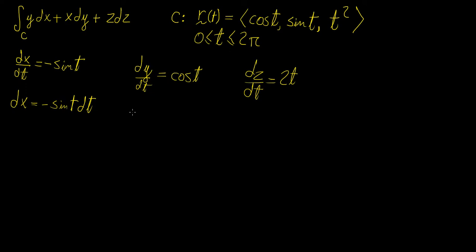And then dy is going to be equal to cosine of t times dt. And dz is going to be 2t times dt.